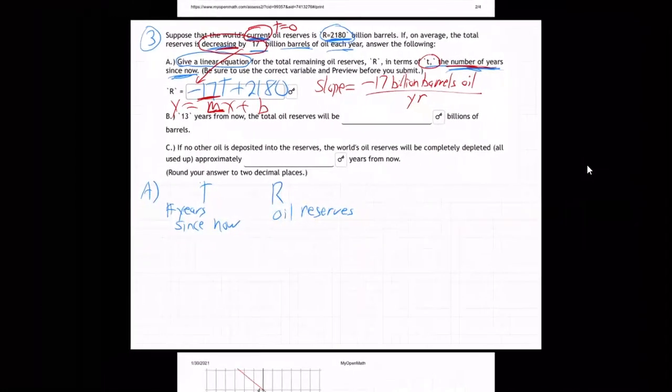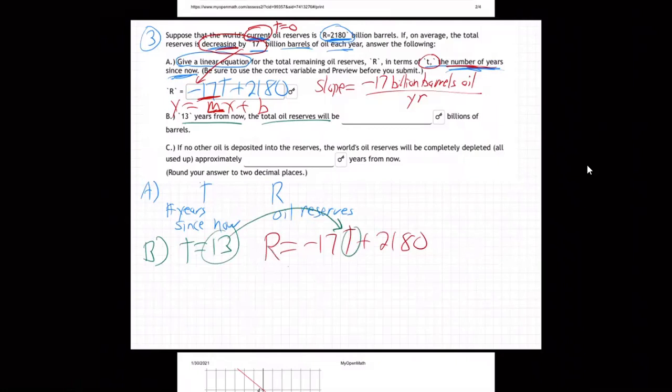And then, on part B, they say, 13 years from now, how much oil? Well, that's T equals 13. So I just take that formula we got, which is R equals minus 17T plus 2180. Grab that 13, and I pop it in right there. And so, or this should be R, not P. I'm thinking back to some of those other problems. Reserves is minus 17 times 13 plus 2180. So the oil reserves, hit the buttons on your calculator. That's what I'm doing. Minus 17 times 13 plus 2180 is 1959. 1959 billion barrels of oil.